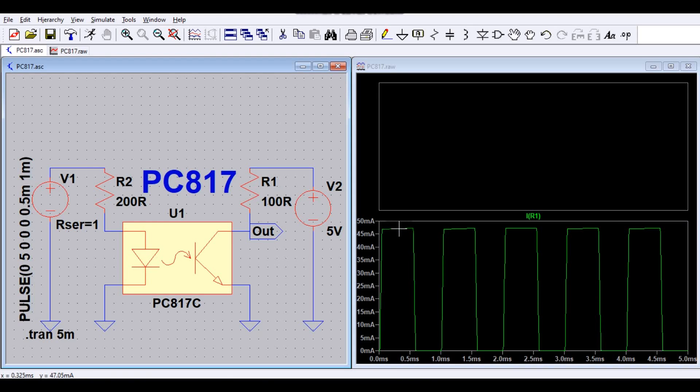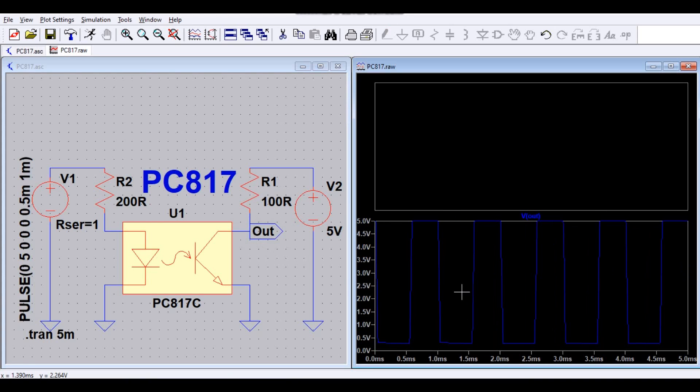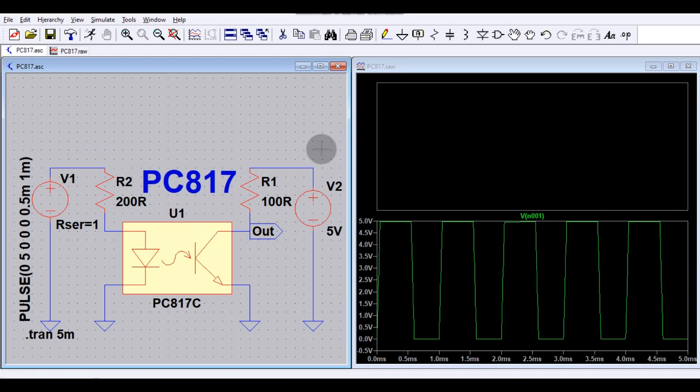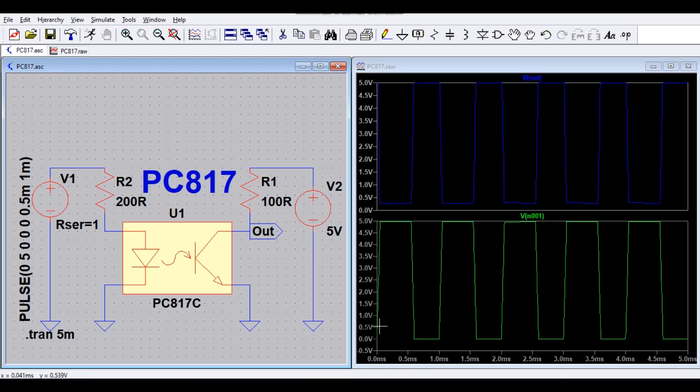And at the secondary side, the current flowing through this resistor is let us say 45 milliampere and the output voltage is this. So let us say one probe at here, this is your input voltage. And let us say what is your output voltage. So whenever your input is high, that means at 5 volt, at the same time your output is low.